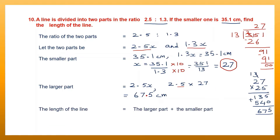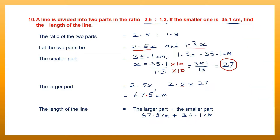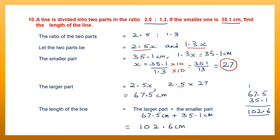To find the length of the line, we add the larger part and the smaller part. 67.5 plus 35.1: 5 plus 1 is 6, 7 plus 5 is 12 carry 1, 6 plus 3 plus 1 is 10. So we have got the length of the whole line as 102.6 centimeters.